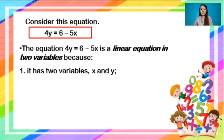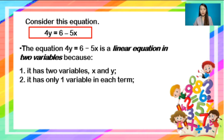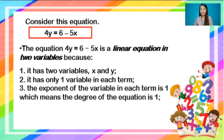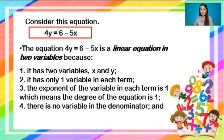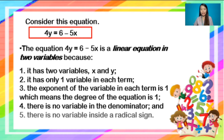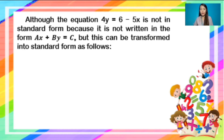Because: one, it has two variables, which is x and y. Two, it has only one variable in each term. Three, the exponent of the variable in each term is 1, which means the degree of the equation is 1. Fourth, there is no variable in the denominator. And fifth, there is no variable inside a radical sign.